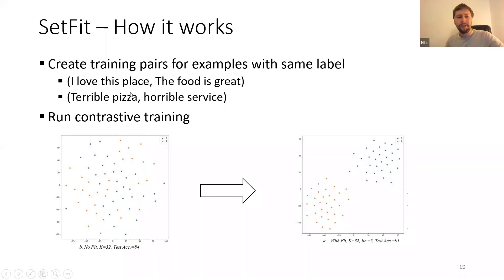Similarly, "terrible pizza" and "horrible service" should also be close in the vector space, has the same label. Then everything that has different labels like "I love this place" and "horrible service" should be distant in the vector space. And then you run on these few examples like 10 training examples contrastive training.